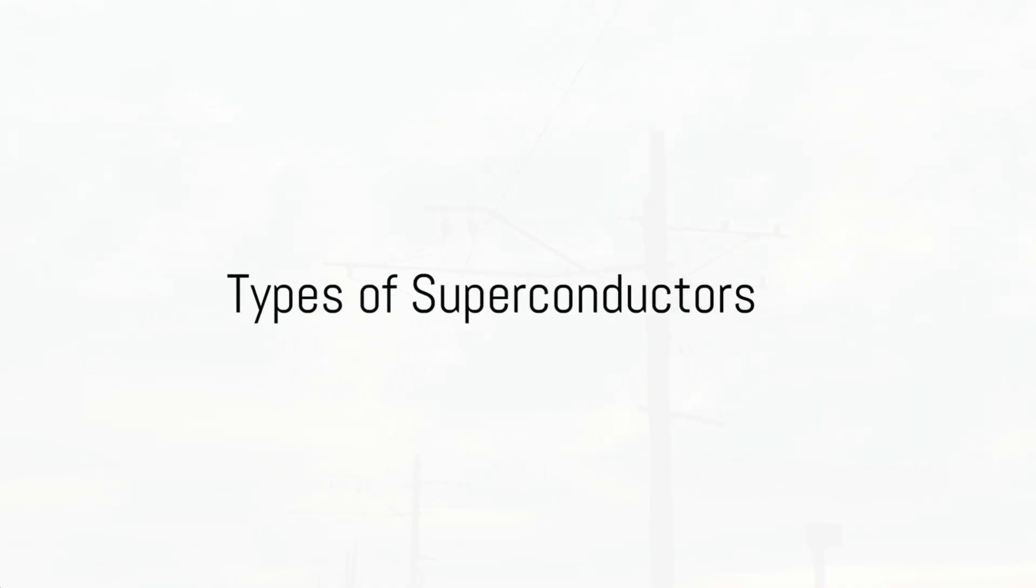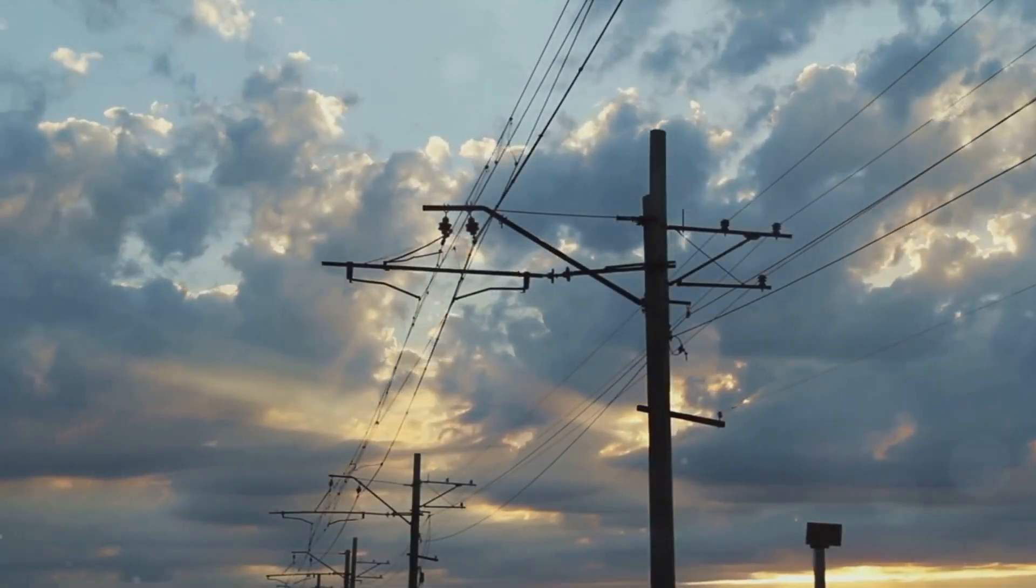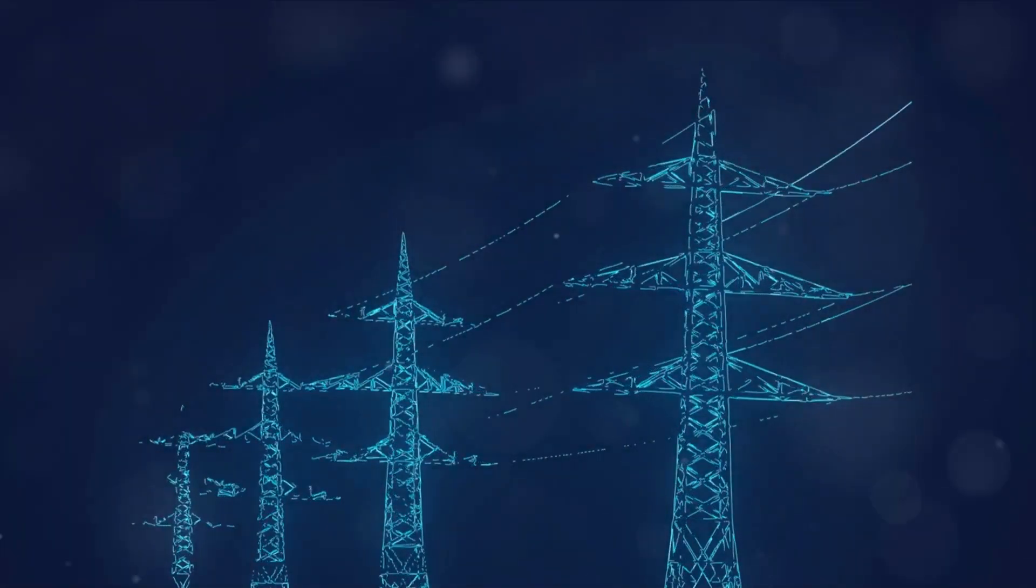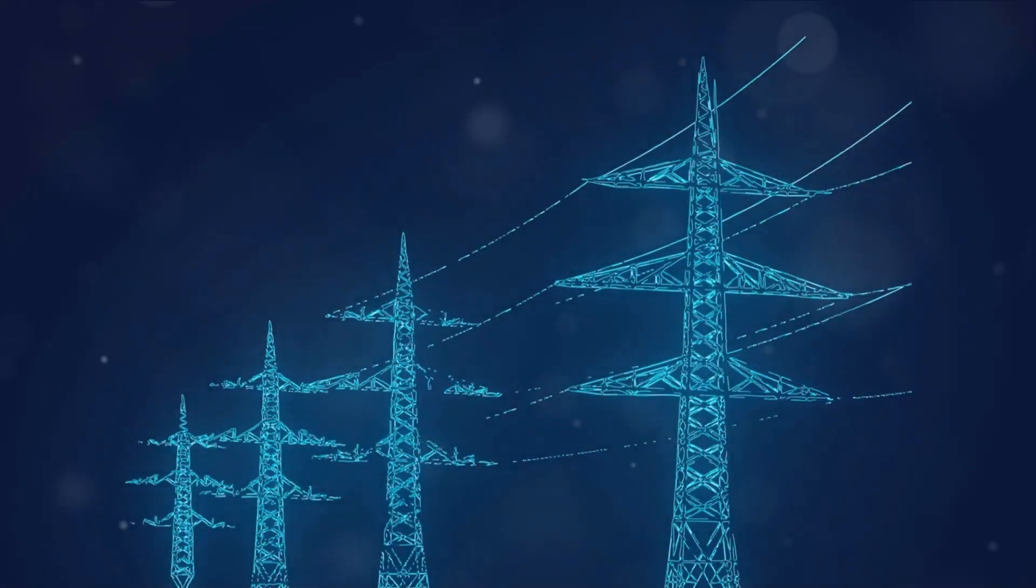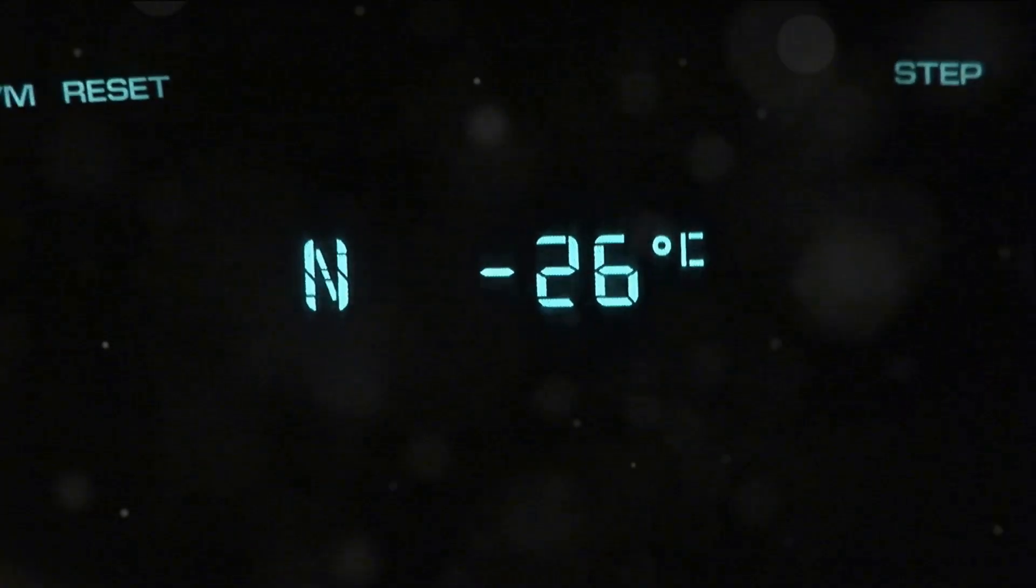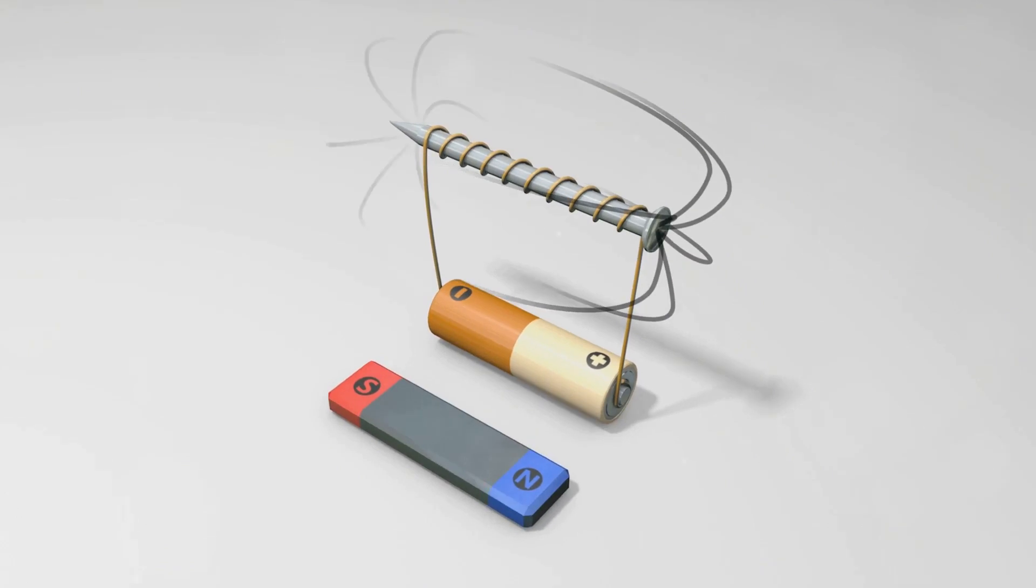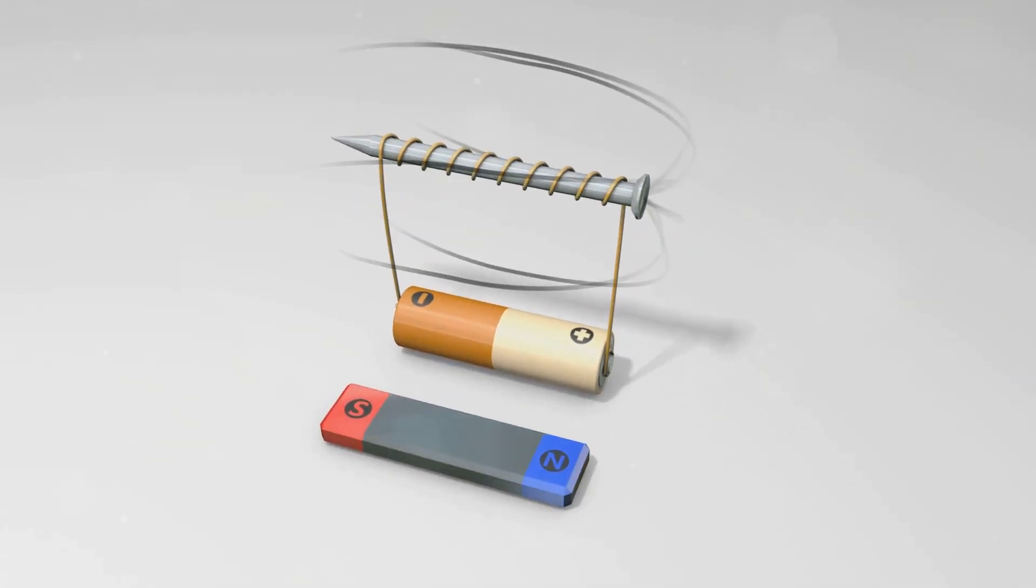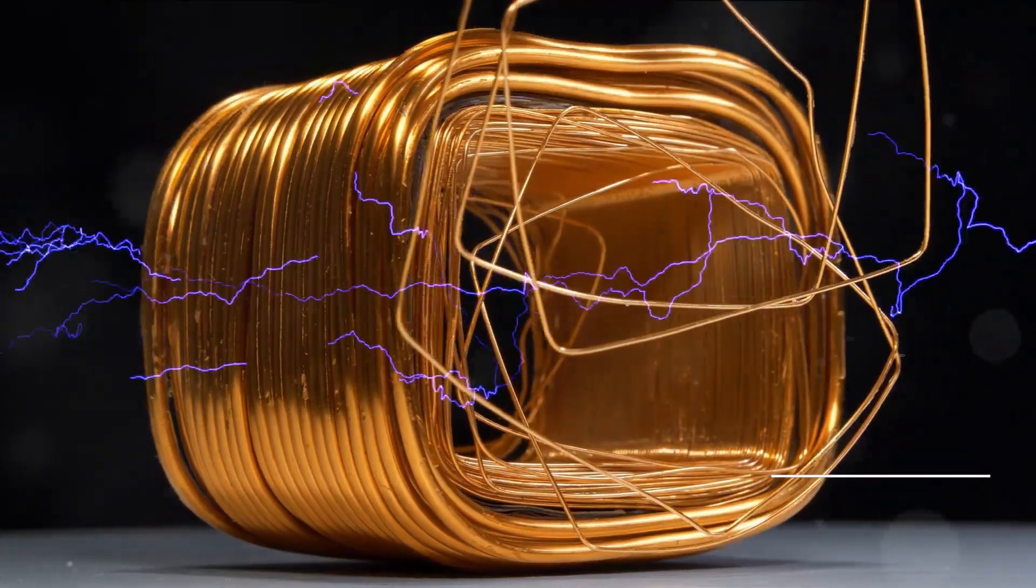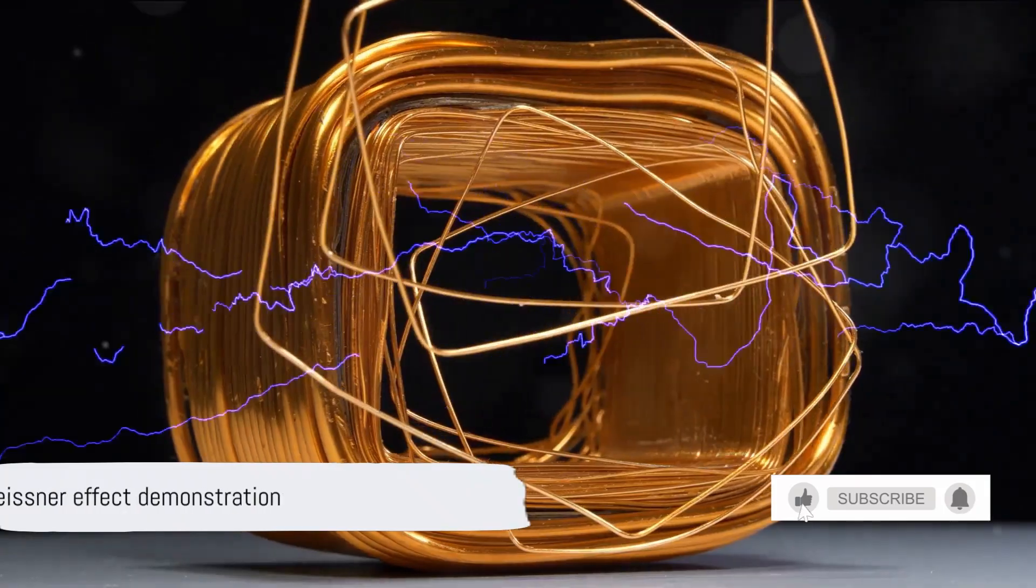Superconductors come in two main types, type 1 and type 2, each with unique properties. Type 1 superconductors, like pure metals such as mercury and aluminum, become perfect conductors below a certain critical temperature. Not just that, they also exhibit a fascinating phenomenon known as the Meissner effect, where they expel all magnetic fields. Imagine a magnet levitating over a superconductor defying gravity. That's the Meissner effect in action.